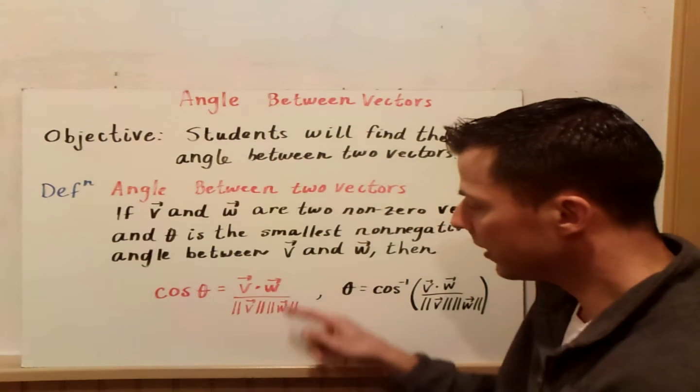And in order to do that, we need to know that if vector V and W are two non-zero vectors, and theta is the smallest non-negative angle between the two vectors, then the following is true. The cosine of theta is equal to the dot product of our two vectors divided by the product of the two magnitudes.